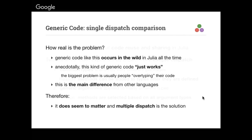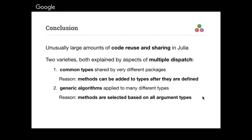In conclusion, we see unusually large amounts of code reuse and sharing in Julia. There are two varieties, both explained by multiple dispatch but different aspects of it. Common type sharing happens because methods can be added to types after they're defined. Generic algorithms apply to lots of different types and just work, because methods are selected based on all the types of all the arguments — without friction and without corner cases that fail.